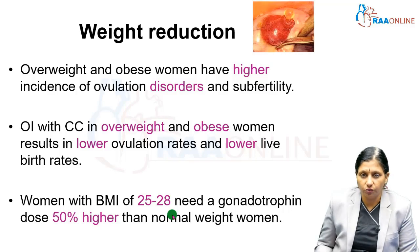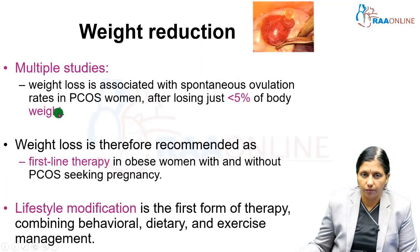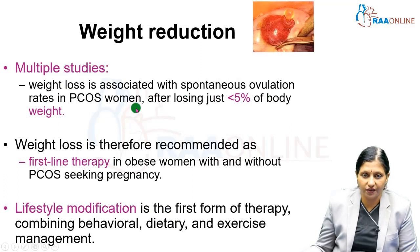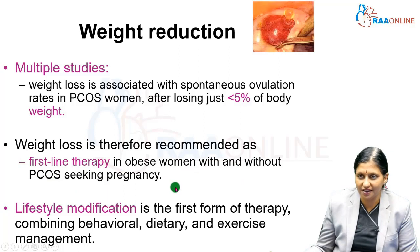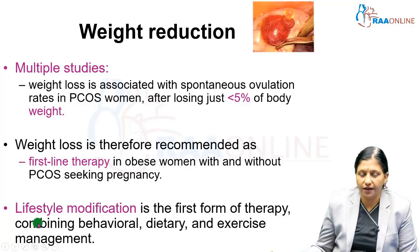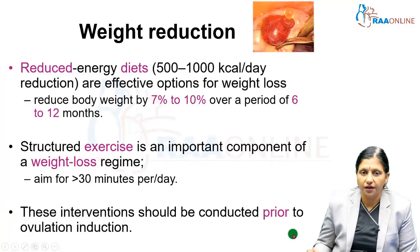Multiple studies have shown that weight loss is associated with spontaneous ovulation in PCOS women. After losing just less than 5% of body weight, they become ovulatory. Weight loss is therefore recommended as first-line therapy in obese women with or without PCOS who are seeking pregnancy. Lifestyle modification is the first form of therapy, combining behavioral, dietary, and exercise management.